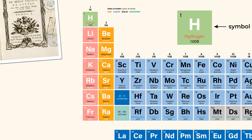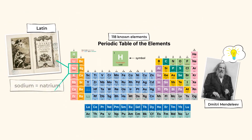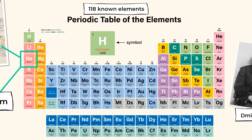For example, the symbol for sodium is NA. Why? Because in Latin, the name for sodium is natrium. But don't worry — you'll see the full name of each element just below the symbol.